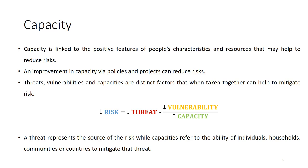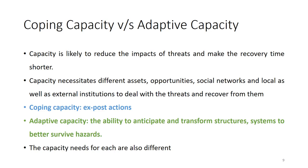A threat represents the source of the risk, while capacity refers to the ability of individuals, households, communities, or countries to mitigate and reduce that threat or the consequences of that particular threat. With capacity, you're not only reducing the impact of threat, but you can make the recovery time shorter. Capacity, however, needs assets, opportunities, social networks, financing, and good institutions to deal with and recover from these threats or hazards.